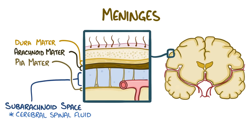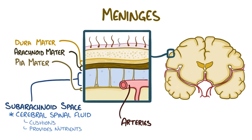CSF is a clear, watery liquid which is pumped around the spinal cord and brain, cushioning them from impact and bathing them in nutrients. This space is also where the arteries that supply the brain travel, and it is the location of the blood-brain barrier where CSF and the vascular system can exchange nutrients.